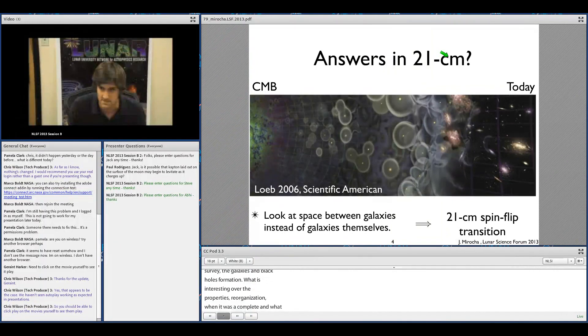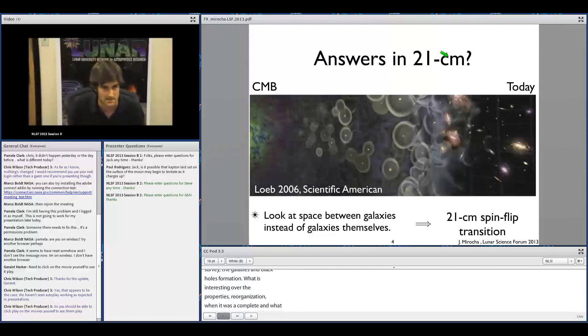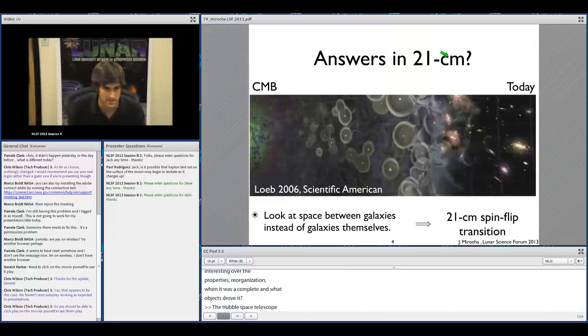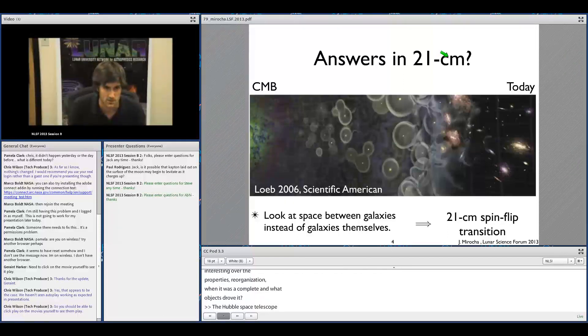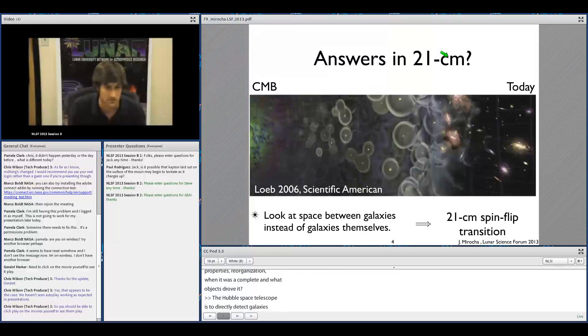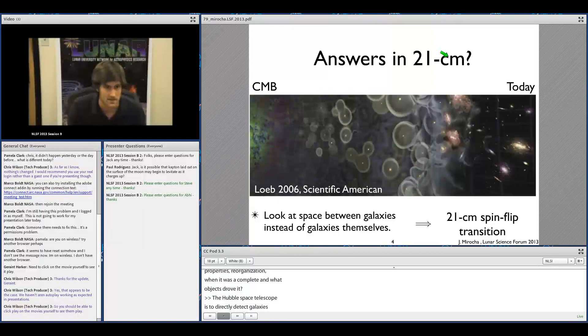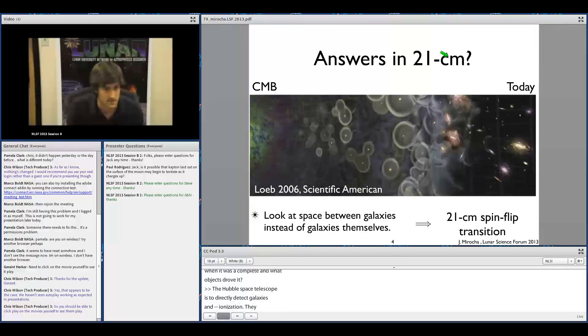While the Hubble Space Telescope is starting to directly detect galaxies well into the epoch of reionization, the prospects for directly detecting the first stars and black holes, which likely form at much higher redshifts - redshifts 20, 30, and beyond potentially - the prospects for detecting those directly are very bleak.